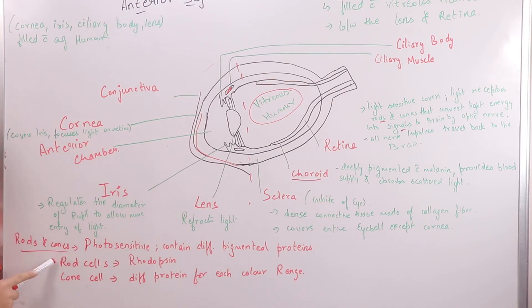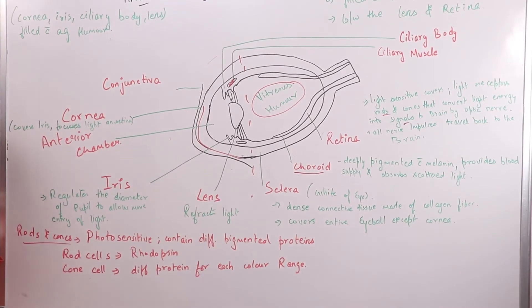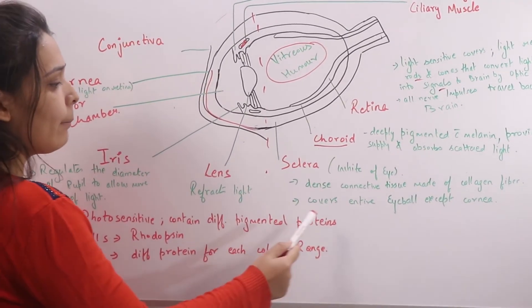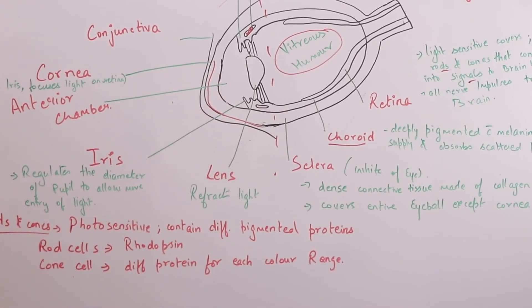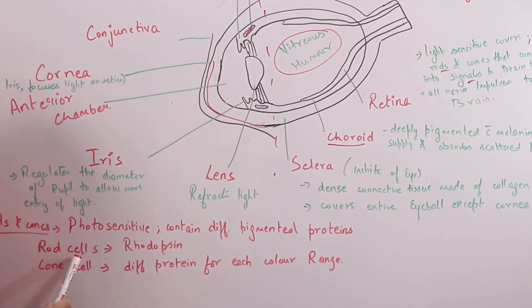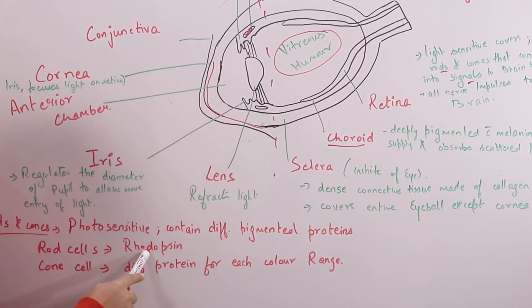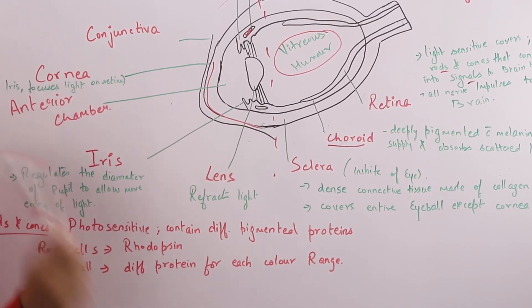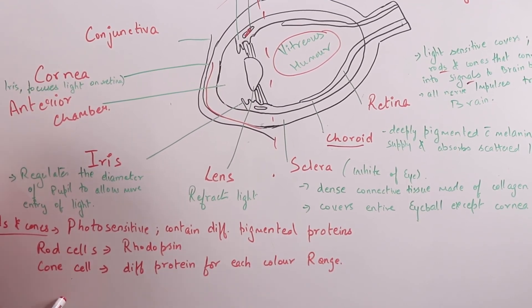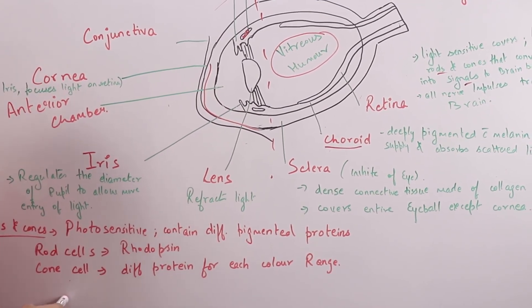Rods and cones are photosensitive cells that contain different pigmented proteins. Rod cells contain rhodopsin. There are different proteins for different color ranges and different cells.